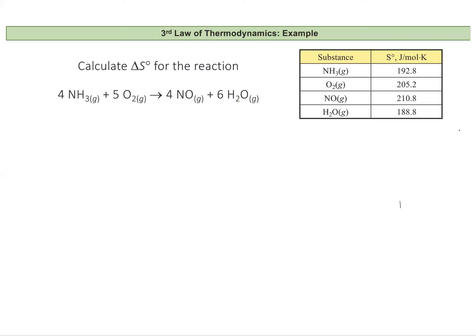Now let's do a sample problem calculating the change in entropy for a reaction — the combustion of ammonia — using standard entropy values pulled from the table. The change in entropy for the reaction equals the sum of the products' entropies minus the sum of the reactants' entropies, taking stoichiometric coefficients into account. So we have: four times S°(NO) plus six times S°(H₂O gas), minus four times S°(NH₃) plus five times S°(O₂ gas). Be careful to use the entropy for water in the gas phase.